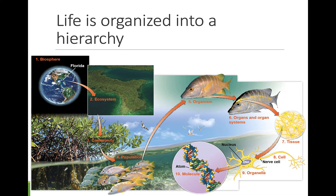Life can be studied at many different levels, which are organized into a hierarchy. The smallest matter is a single atom. Atoms form chemical bonds to create molecules. Molecules can be small, like water and carbon dioxide, or large, like protein and carbohydrates. Many different molecules are used to form organelles inside of our cells. Each organelle performs an essential function, together keeping the cell alive.